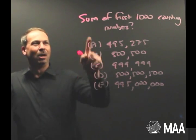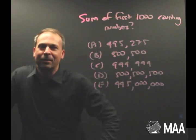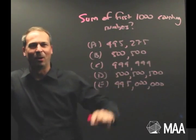For example, look at this question. The sum of the first 1000 counting numbers is which of these following five options?